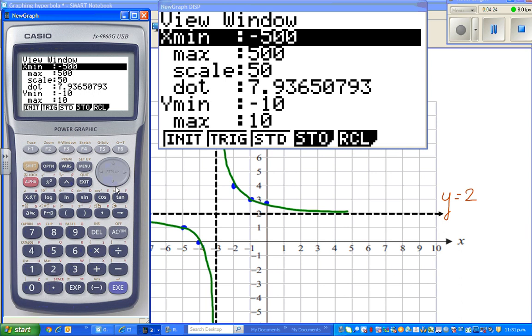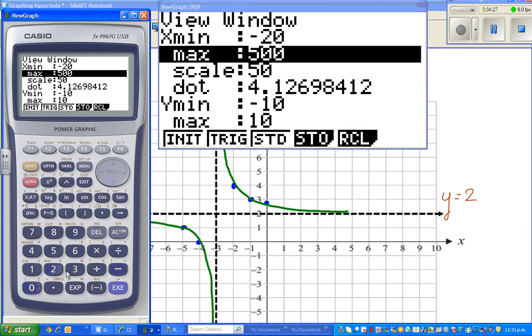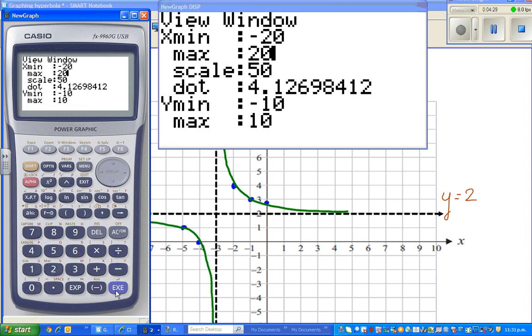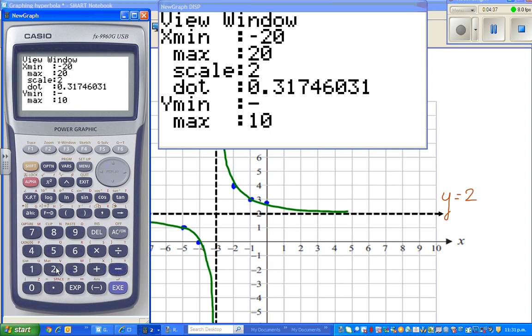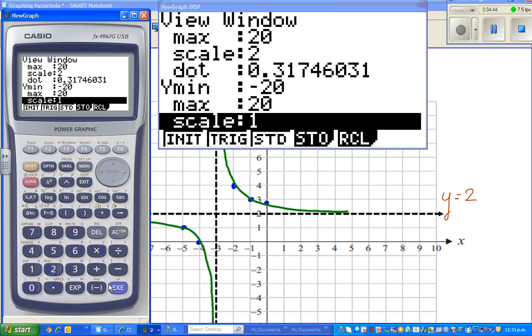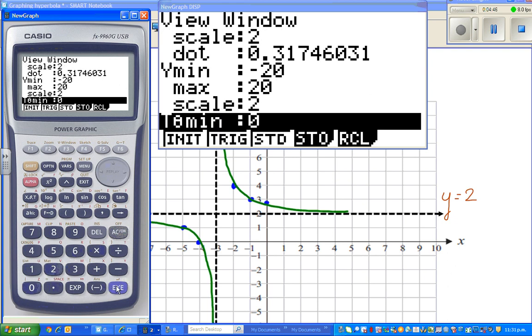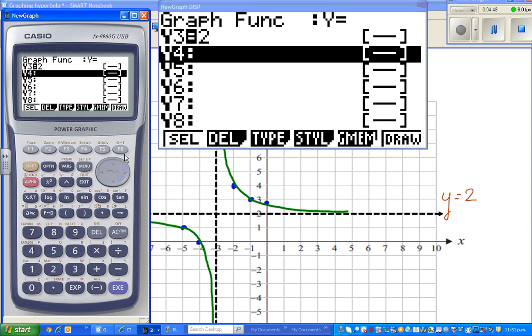Let me make it say -20 to 20, scale of 2. And I had to make this also bigger. -20 to 20, scale of 2. And see what happens. Draw.